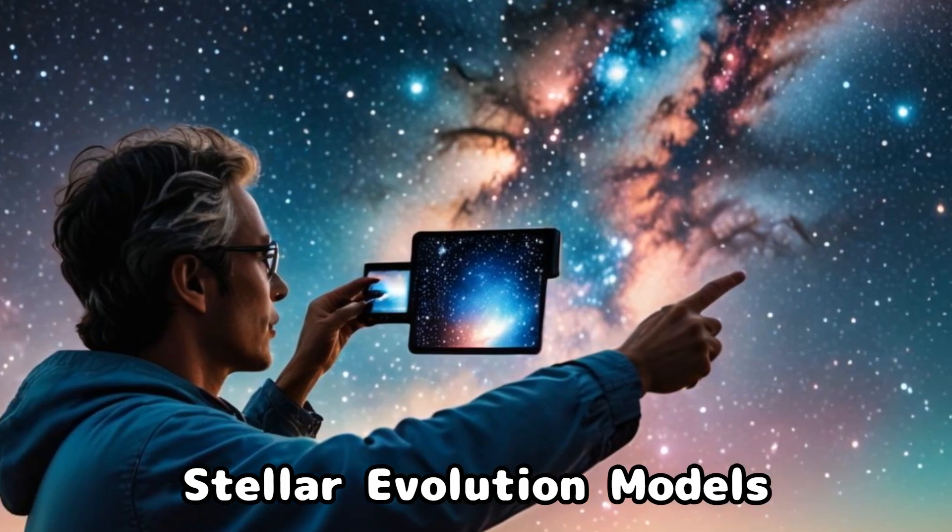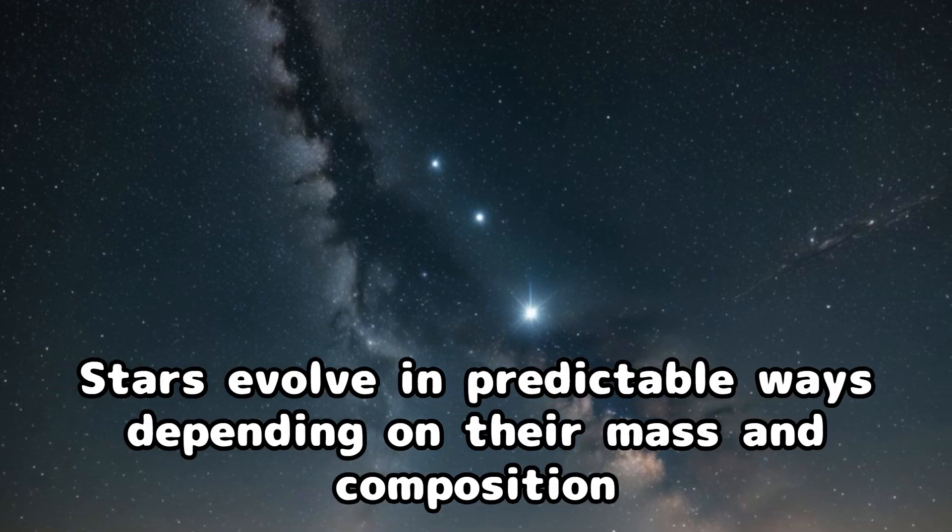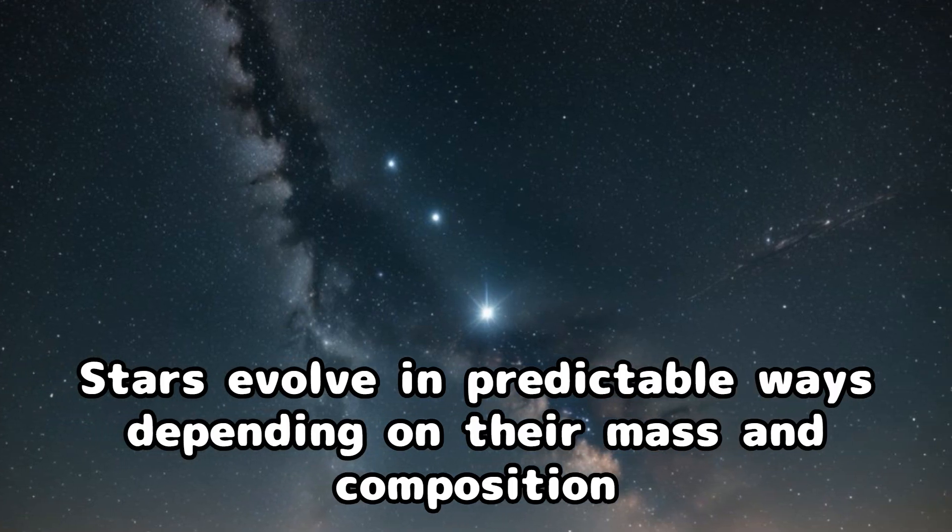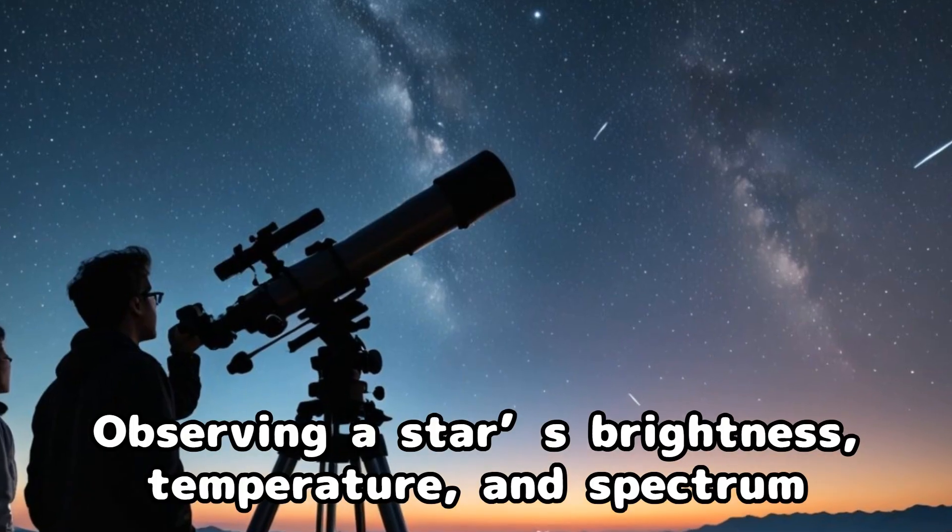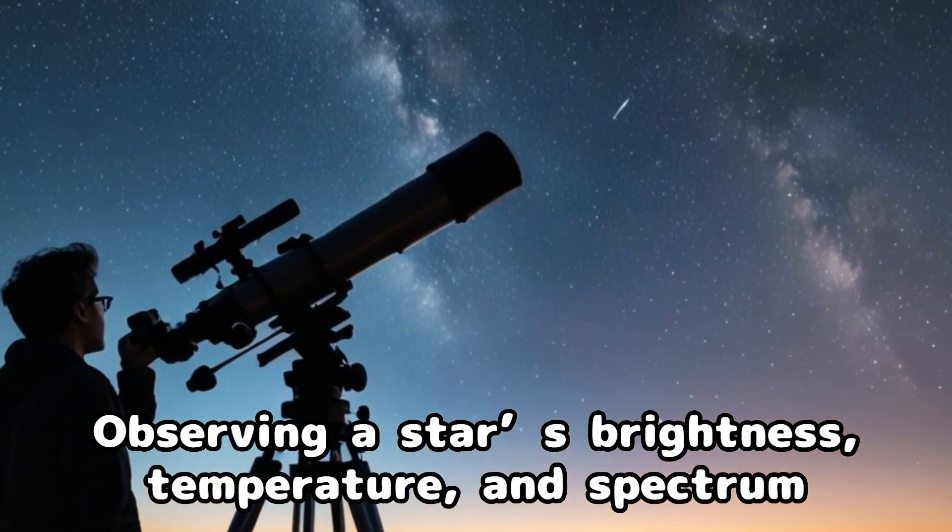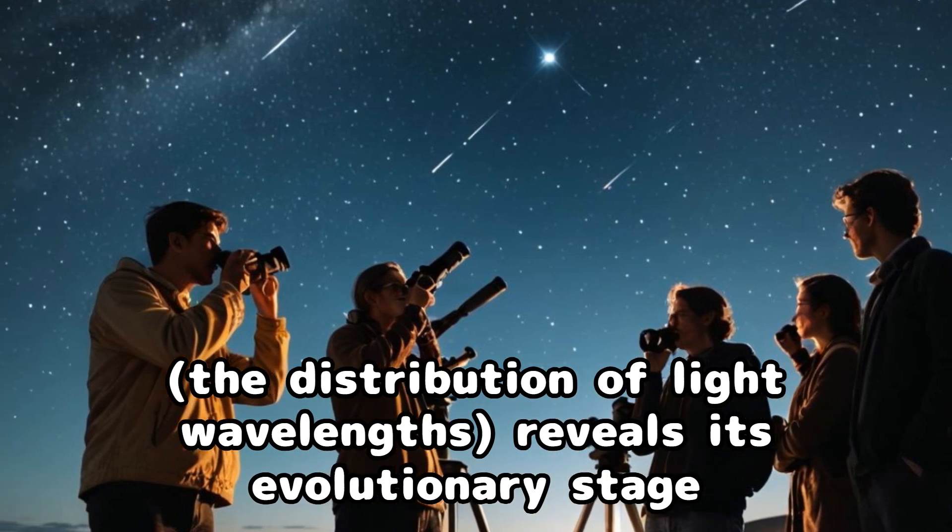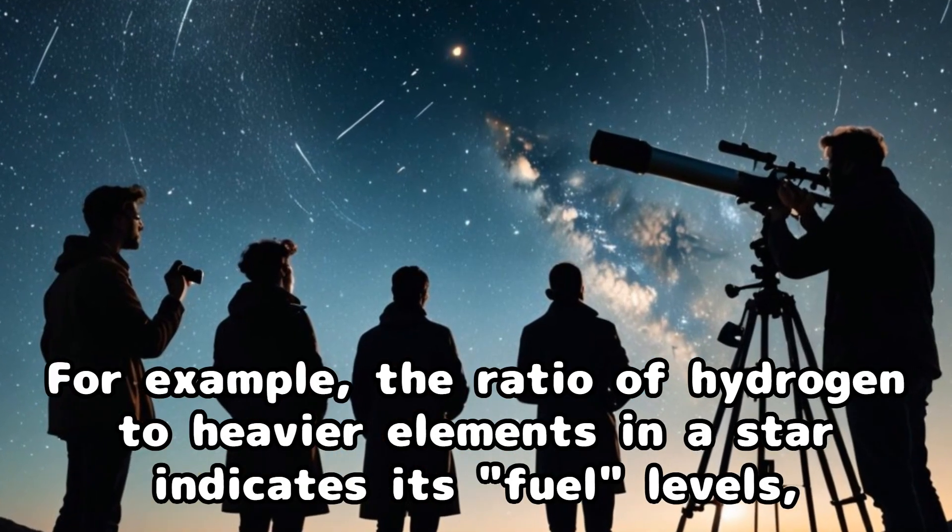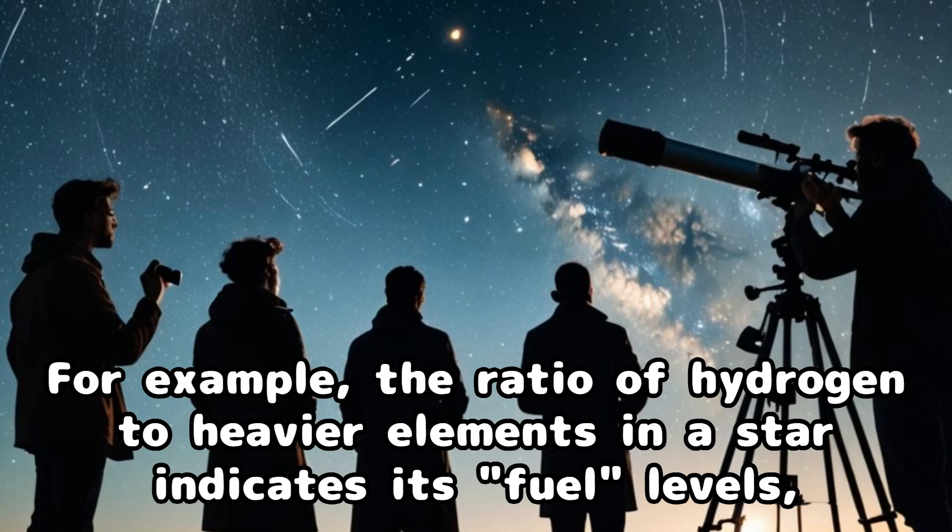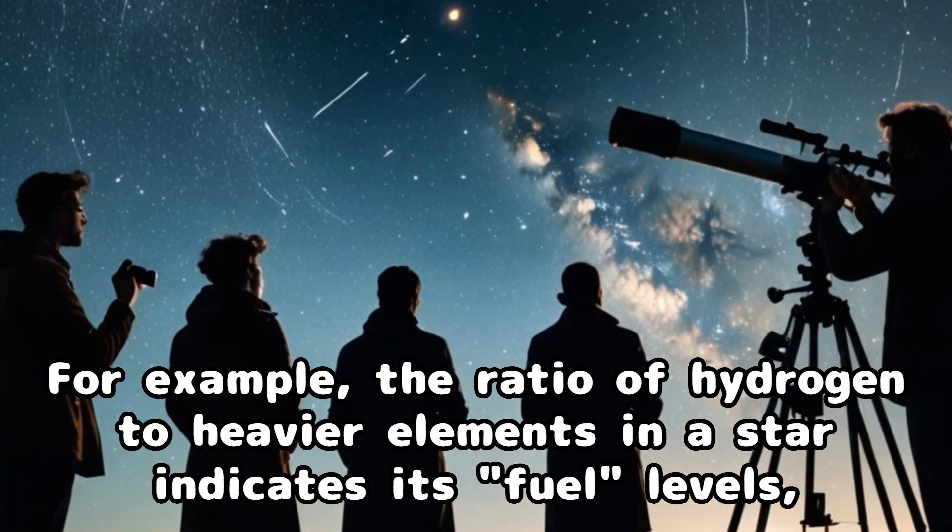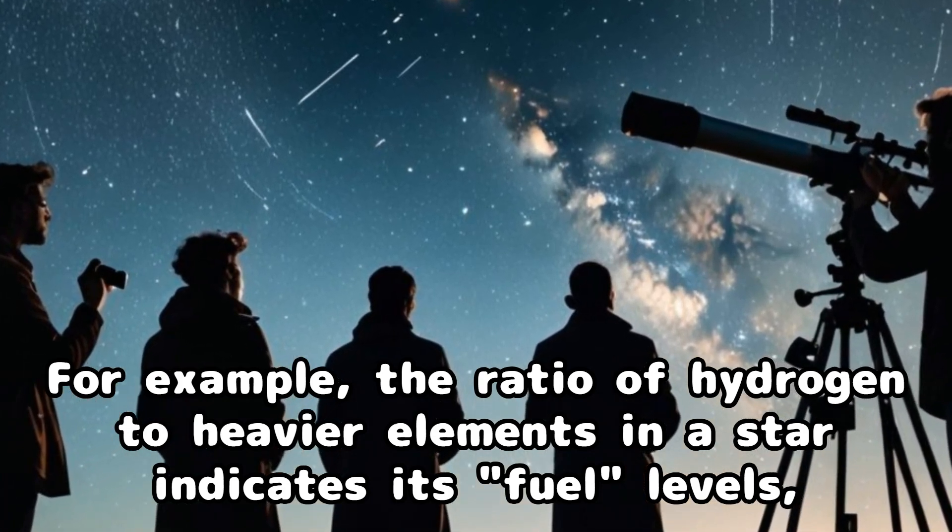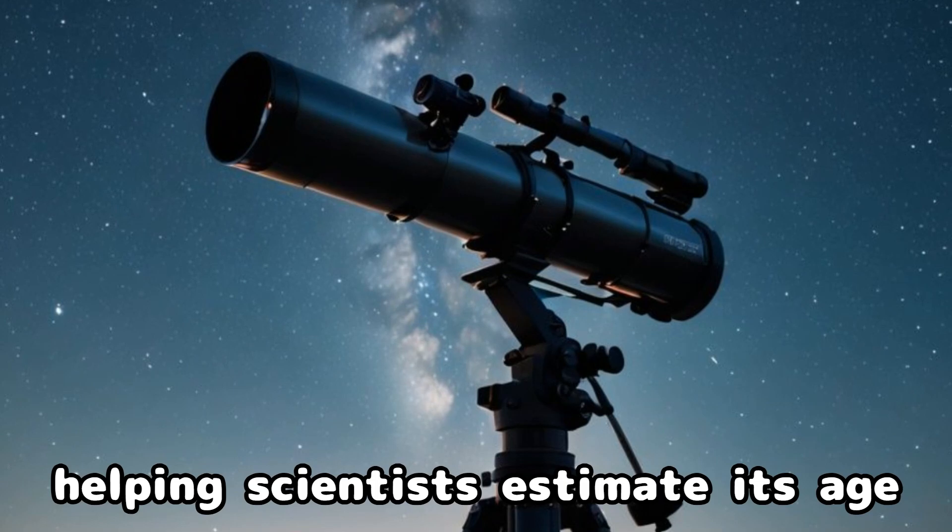Stellar evolution models: Stars evolve in predictable ways depending on their mass and composition. Observing a star's brightness, temperature, and spectrum—the distribution of light wavelengths—reveals its evolutionary stage. For example, the ratio of hydrogen to heavier elements in a star indicates its fuel levels, helping scientists estimate its age.